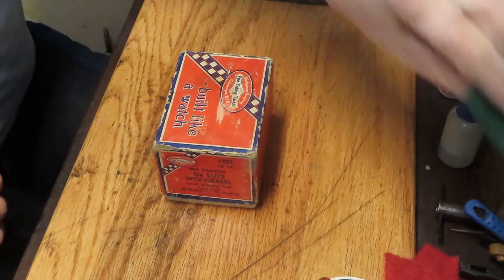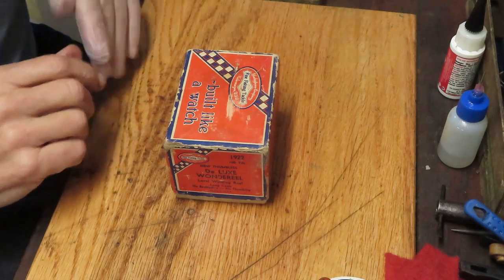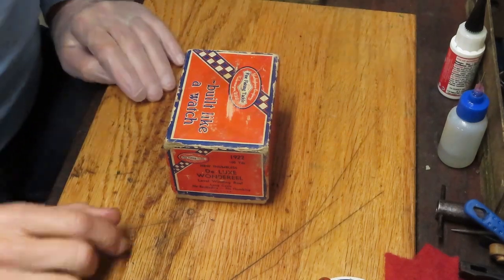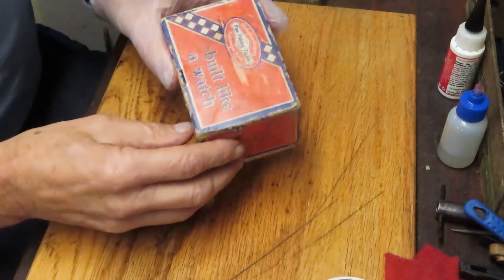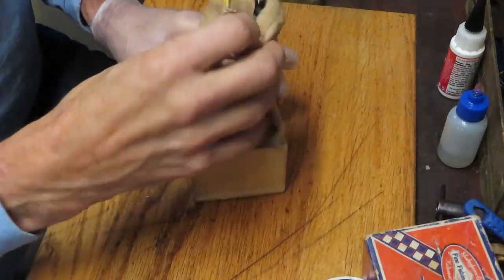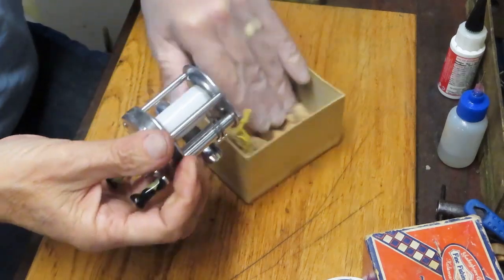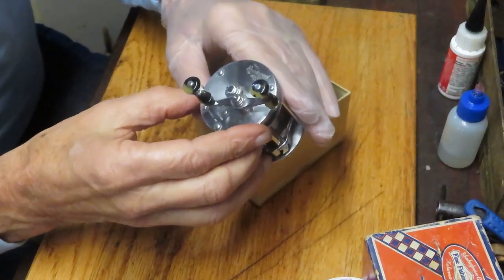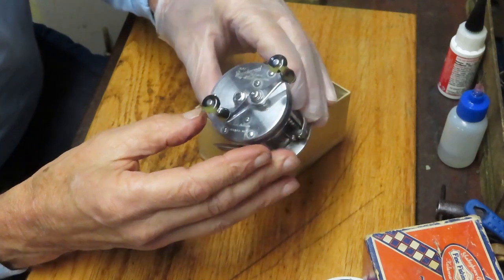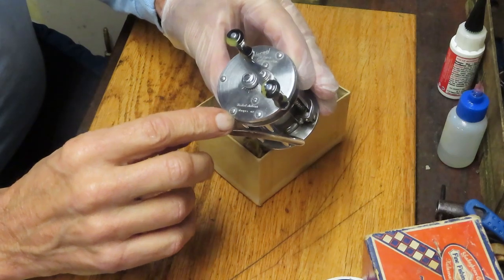Hi, this is Dennis with Second Chance Tackle. Today I have an opportunity to work on a reel that Scott found at a flea market out on the West Coast. It's a Shakespeare reel built like a watch. We have a Shakespeare Wonder Reel Deluxe, 1922. That's not the date, that's the model it carries.